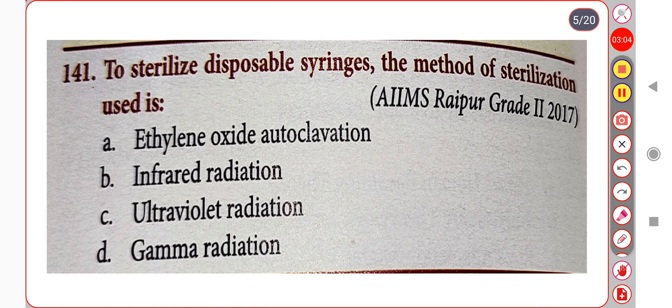Next question. To sterilize a disposable syringe, the method of sterilization used is: Option A. Ethylene oxide. Option B. Infrared radiation. Option C. Ultraviolet radiation. Option D. Gamma radiation. Correct answer is Option D: Gamma radiation.